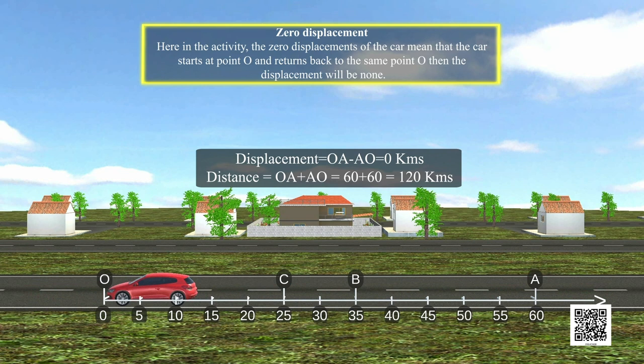But at the same time, the distance will be equal to OA plus AO equals 60 plus 60 equals 120 kilometers.